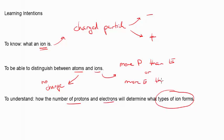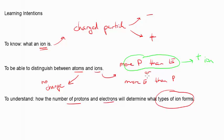Ions are therefore different from atoms, because atoms have to have the same amount of protons as electrons. We also need to understand how the number of protons and electrons determines the type of ion formed. If we have more protons than electrons, we have more positive charge than negative charge, which means we have a positively charged ion. If we have more electrons than protons, we have more negative charge than positive charge, giving us a negatively charged ion — those are the two different types of ions.